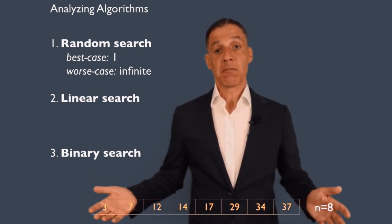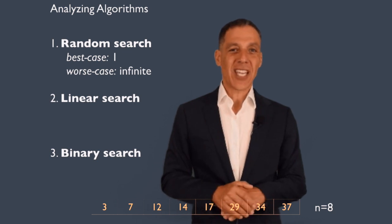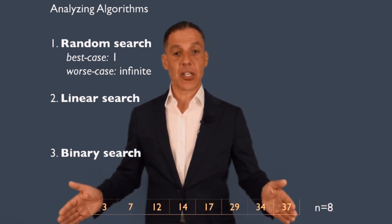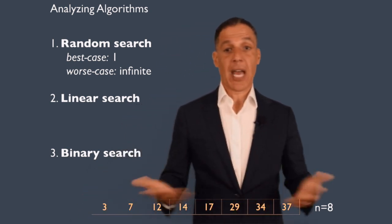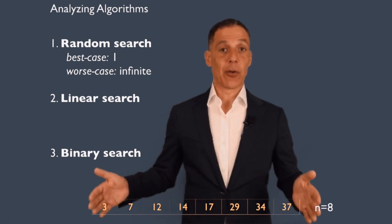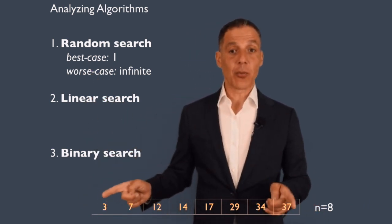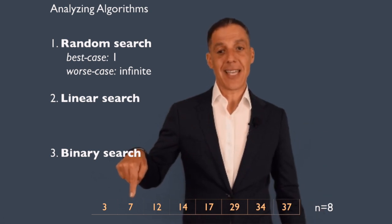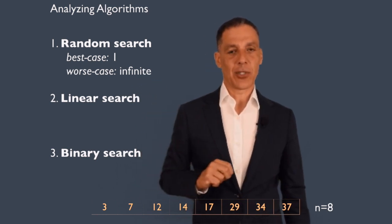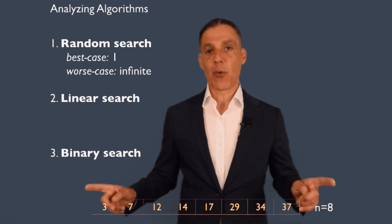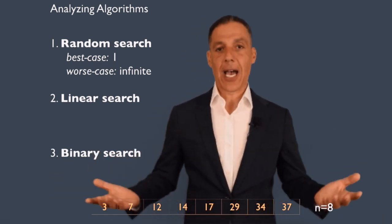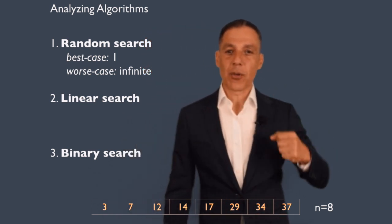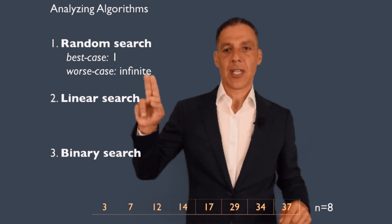The worst case for random search is infinite, because the algorithm never tells you when to stop. If the key is not in the list, you keep looking over and over and never find it. And even if it is in the list, you can simply get unlucky — the random number generator might never pick the right index. So random search is a pretty dumb way to look for something, just stumbling around hoping to find what you're after. This gives us the framework of best case and worst case analysis.